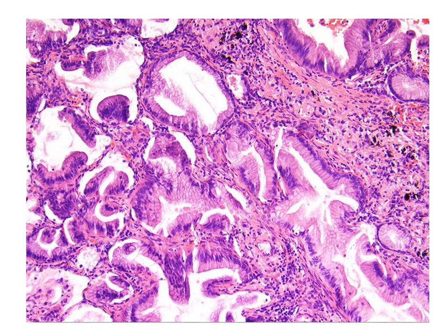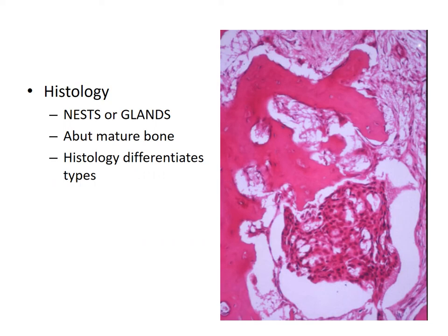Here's an example of what you would see on biopsy when talking about metastatic disease — it is nests and glands. There should never be a time where nests and glands are seen in bone. The histology commonly shows mature lamellar bone, as seen on the left-hand side of the screen, abutting nests or glands on the bottom and right-hand side, with normal or fibrotic marrow surrounding them.